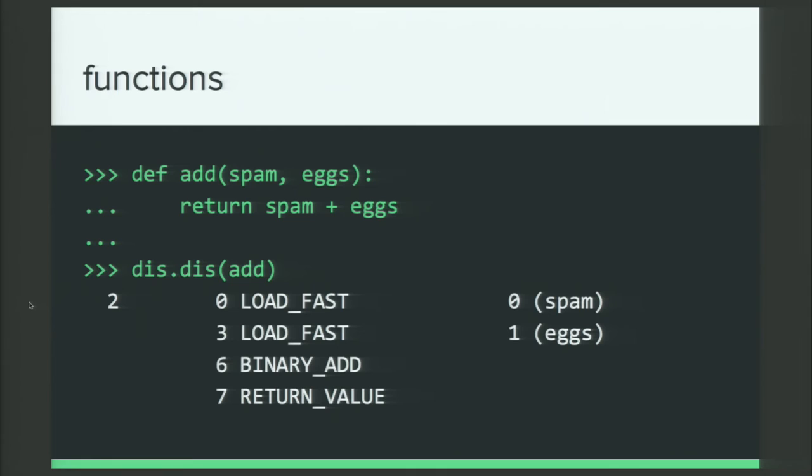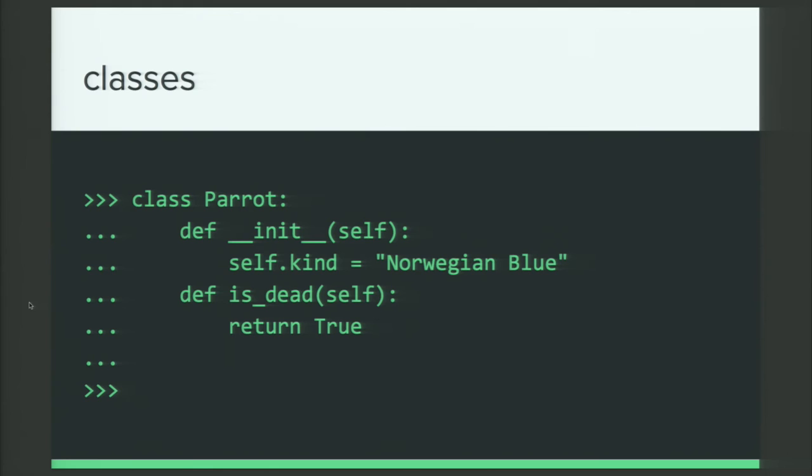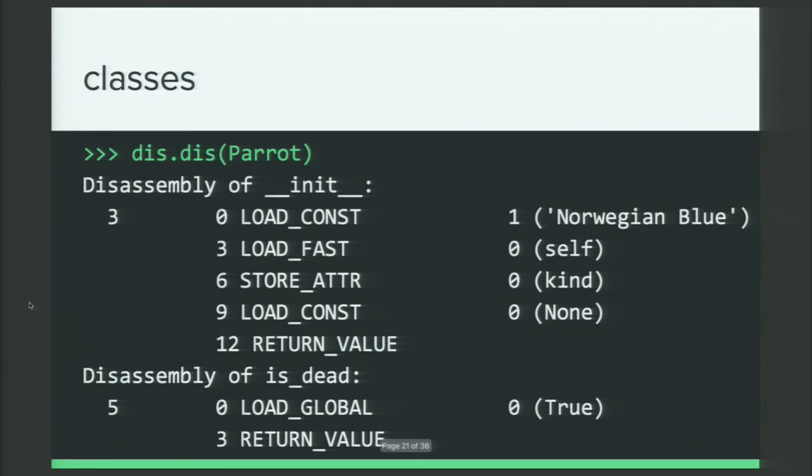Starting to get comfortable with this. What else can we dis? How about a class? A really simple class here. It's a parrot. It's got one attribute called kind. It's a Norwegian blue. This is Monty Python humor for anyone that's not familiar. And it has a method is_dead which always returns true. And when we pass that parrot class to dis, we see that it disassembles each of the methods on that class. So, including the constructor method. And so, here we've got, let's see, a new operation name here in the disassembly of __init__. Here we have store attribute. Cool. So, we're starting to get familiar with some of these new operation names. In my experience, a lot of the times they're self-explanatory. But if you're ever curious, okay, I don't know what that operation name does, just go to the dis documentation. It's all laid out.